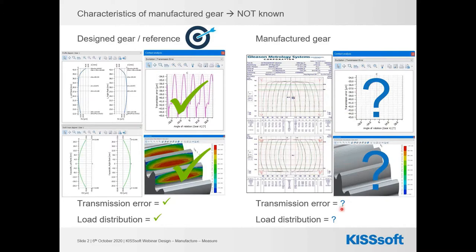That will allow us to assess whether the gear as manufactured will have good enough transmission error and load distribution. When I say 'good enough,' I imply that the assessment is a matter of judgment by a qualified and experienced engineer. Admittedly, it can be based on quantitative criteria — for example, a resulting peak-to-peak transmission error — but experience also shows that qualitative criteria and frankly sometimes gut feeling must also be used.